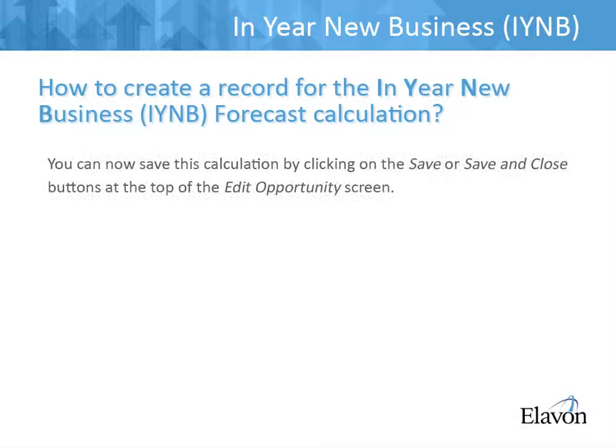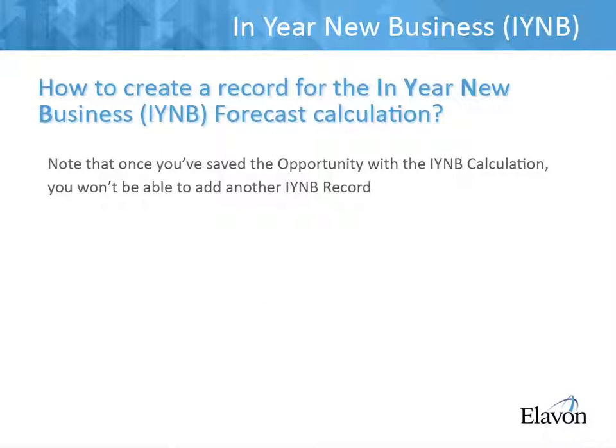You can now save this calculation by clicking on the Save or Save and Close buttons at the top of the Edit Opportunity screen. Please note that once you have saved your opportunity with the IYNB calculation, you won't be able to add another IYNB record, since there can only be one IYNB record per opportunity. If you try to add another IYNB record by clicking on the green plus button, an error message will appear informing you that this action is not allowed.